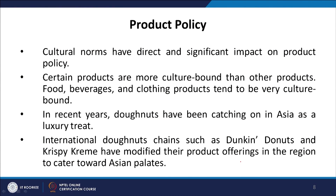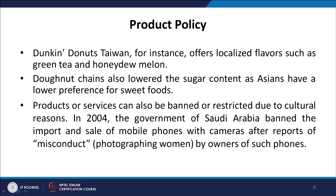In recent years, doughnuts have been catching on in Asia as a luxury treat, where earlier these products were not used. International doughnut chains such as Dunkin' Donuts and Krispy Kreme have modified their product offerings to cater to Asian palates. Dunkin' Donuts Taiwan, for instance, offered localized flavors such as green tea and honeydew melon. Donut chains also lowered the sugar content as Asians have a lower preference for sweet foods.